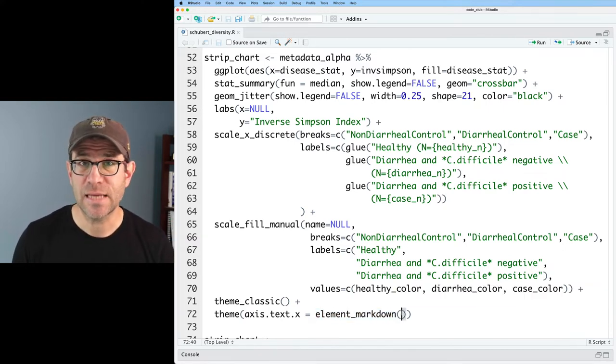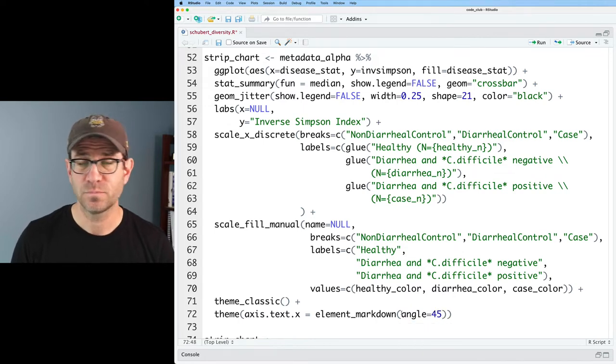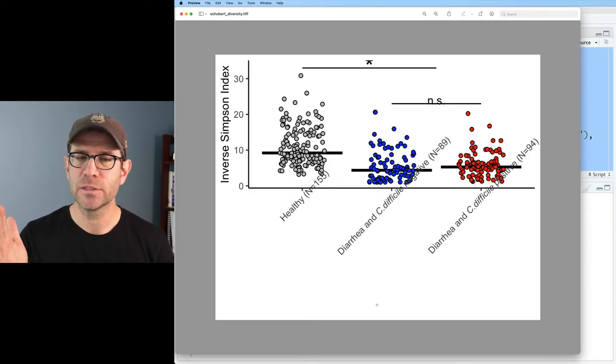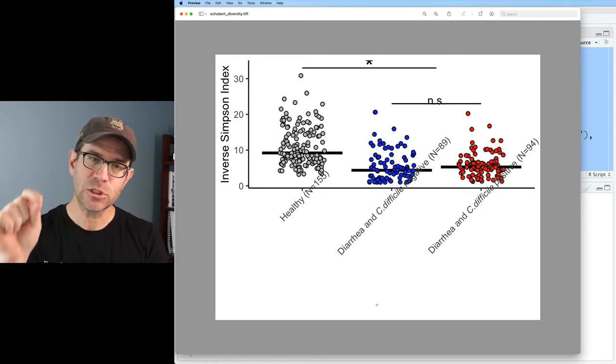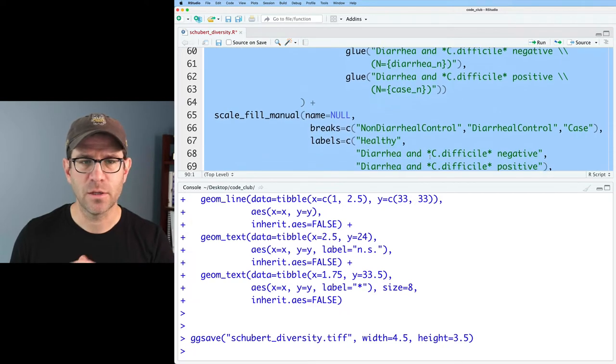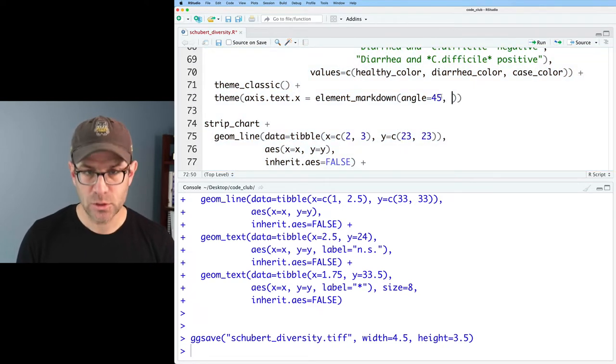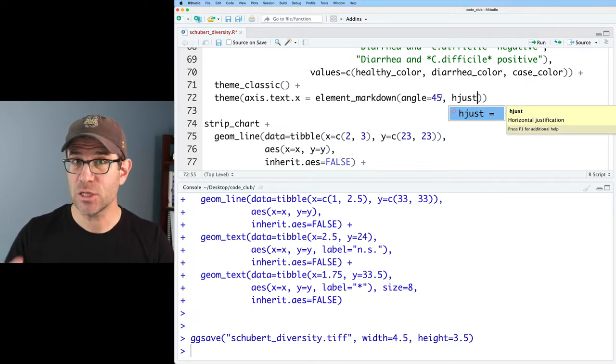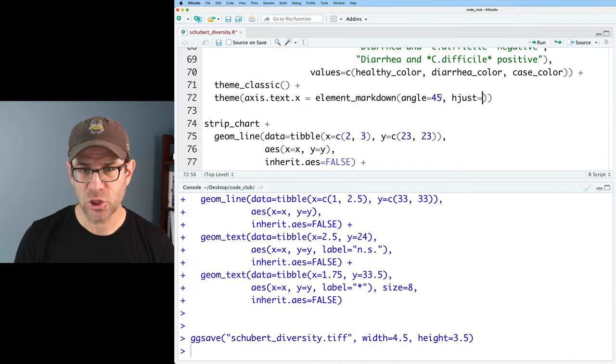Well, the solution that most people take is to rotate those labels so that they're easier to see and so they don't run over each other. If we come down here to our element_markdown for axis.text.x, and if you're using element_markdown or element_text, it doesn't matter. The argument is going to be the same, that we could put in angle equals 45, and that will rotate the text 45 degrees. So let's give this a run and see what we get. Sure enough, we've now rotated them 45 degrees.